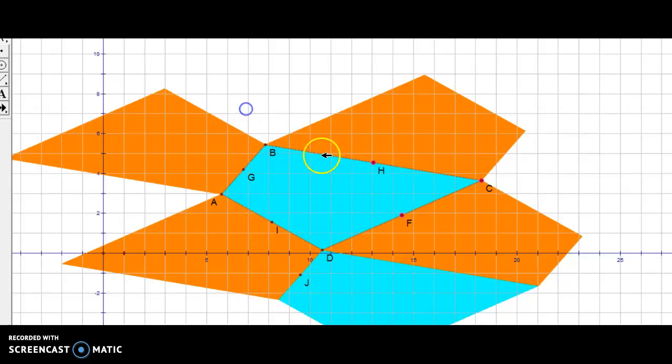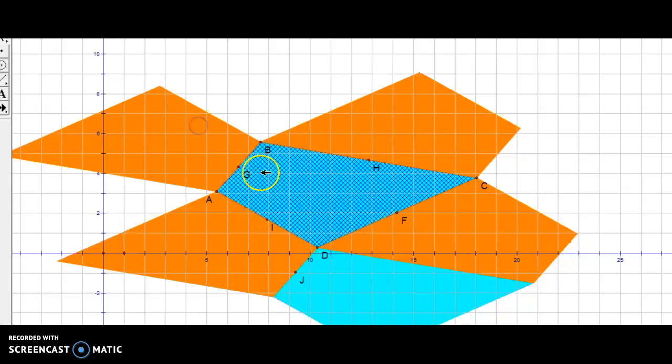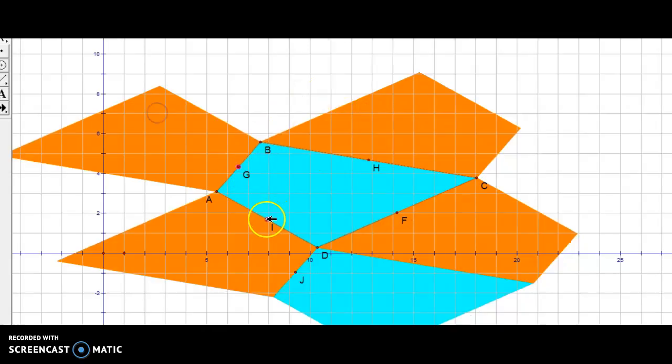Now another interesting thing here is that if I connect all these midpoints together, we construct those segments, I get this quadrilateral which is going to be a parallelogram. So our original shape is all based off of a parallelogram.